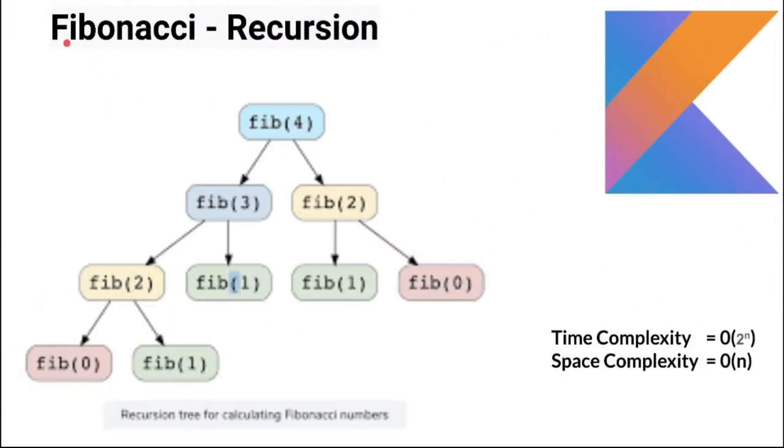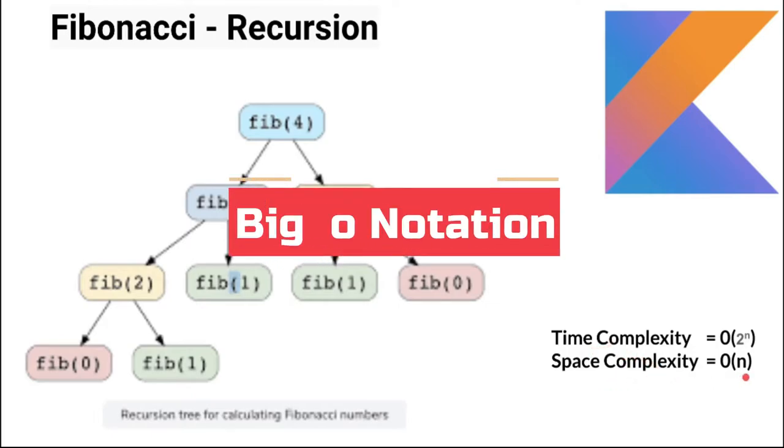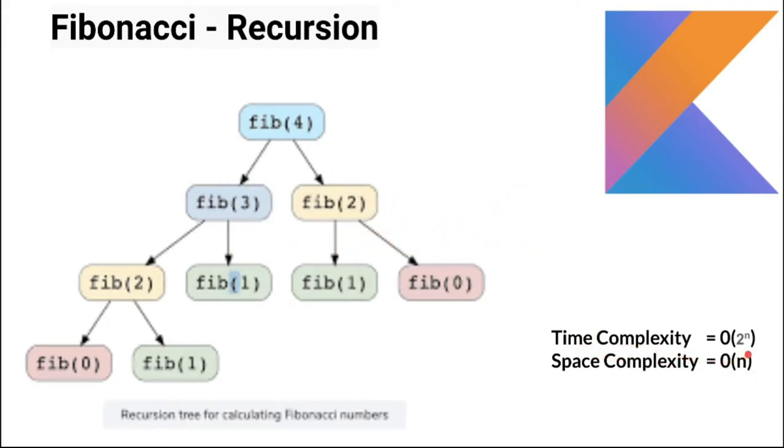To calculate the Fibonacci value using recursion, we should know the time complexity and the space complexity. The space complexity is O(n) in big O notation and the time complexity is O(2^n).